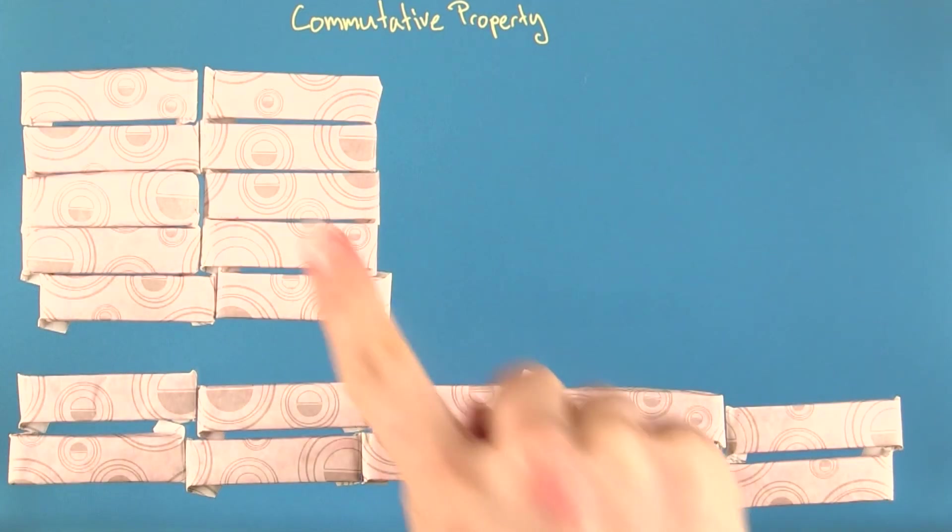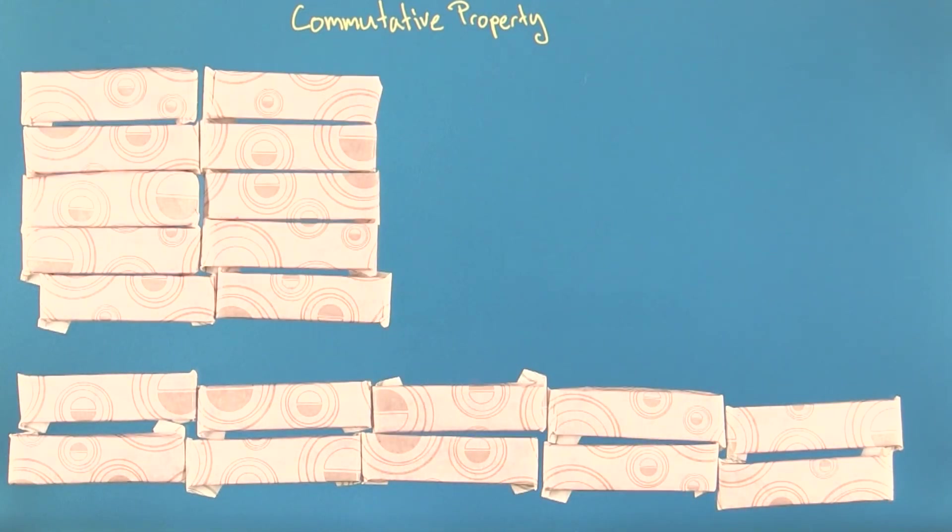These two arrangements are equivalent. We've just reversed the rows and the columns. Switching the order of the rows and the columns does not change the results. This is the main characteristic of the commutative property.